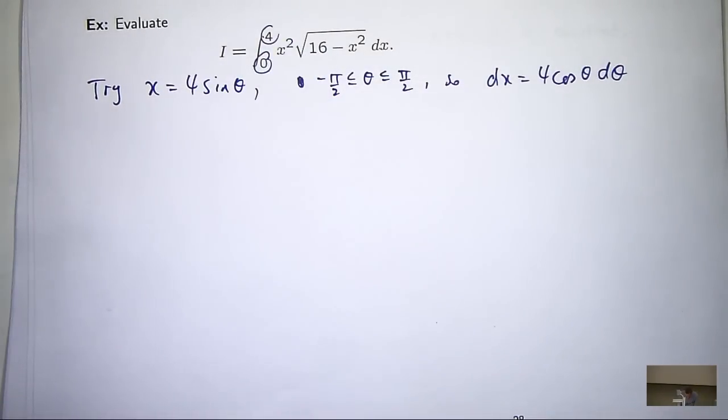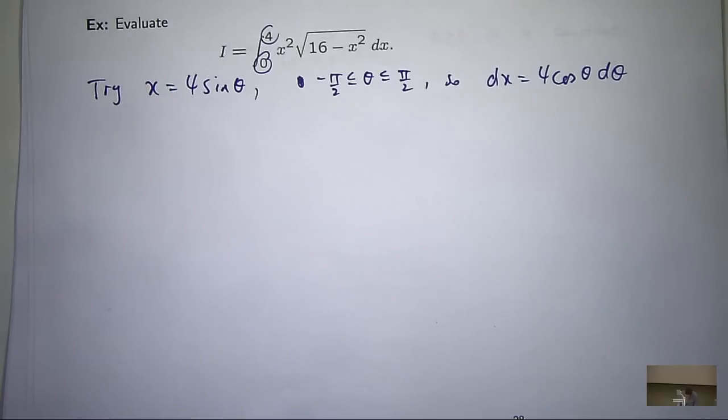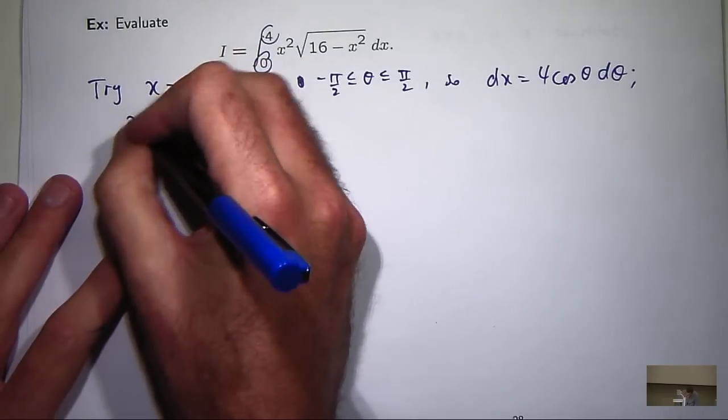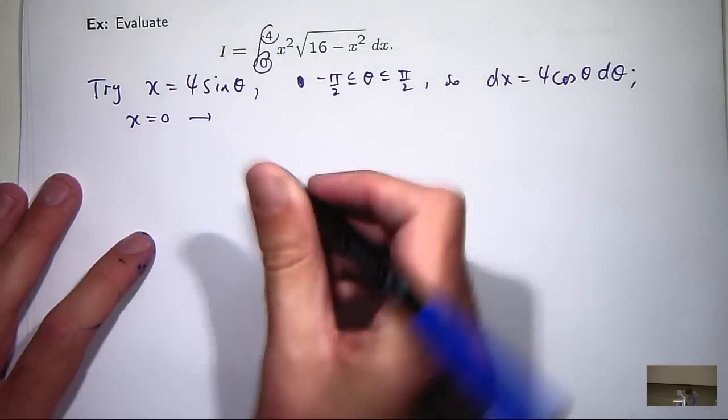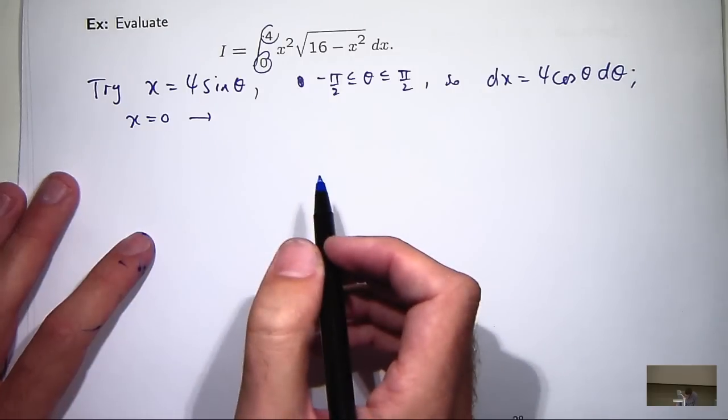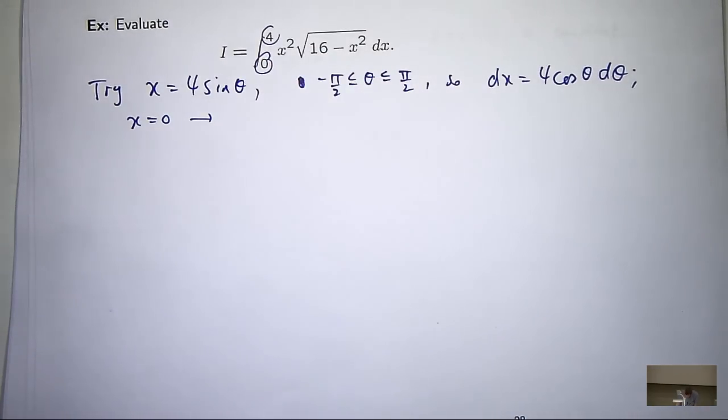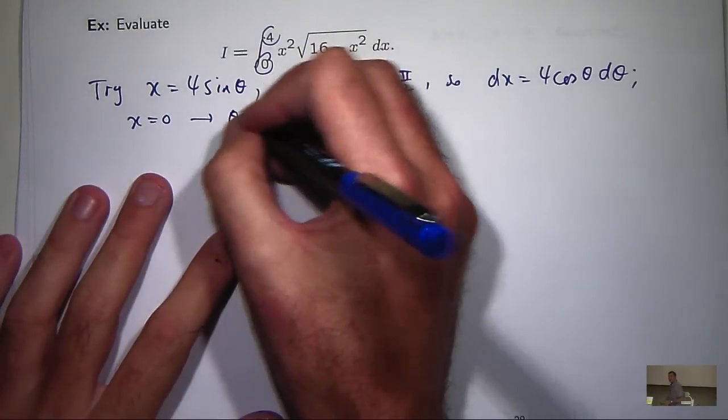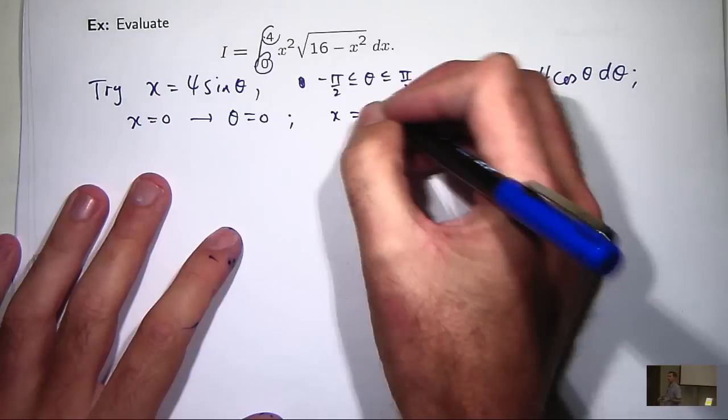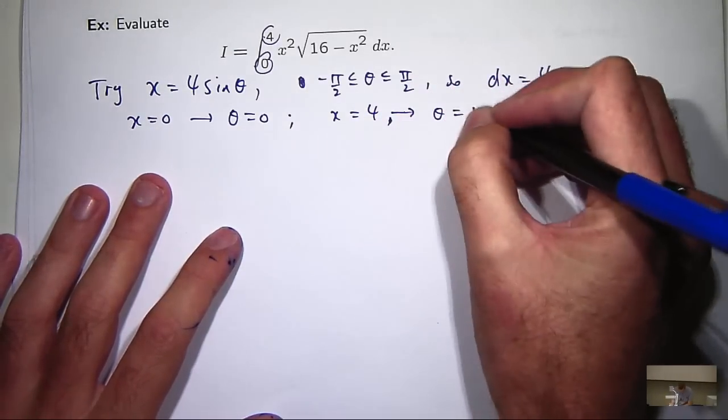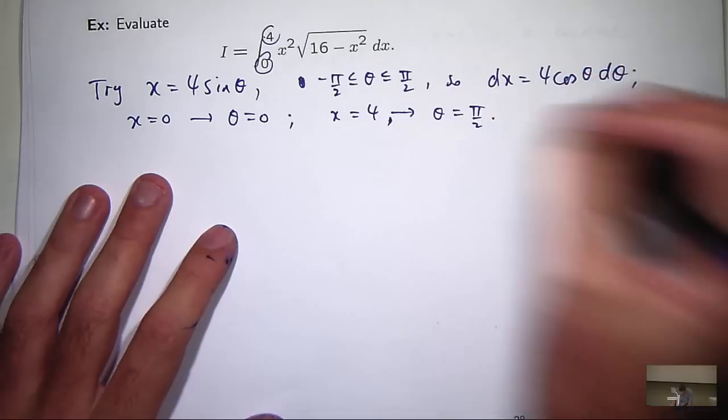So what, because this is a definite integral, I'm going to change the limits of integration as well. So if x equals 0, what's theta going to be? 0, right. And for x equals 4, theta is going to be pi on 2. Good.